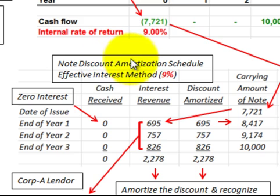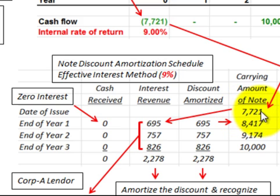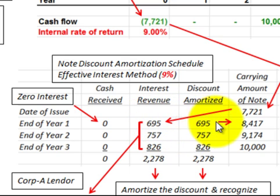Since the note was sold below its face value, we set up a discount amortization schedule using the effective interest method at the 9% implicit rate. Because it's a zero interest-bearing note, cash payments are zero for each year. To determine interest revenue for year one, take the carrying value of $7,721 times 9%, which gives us $695. Since there are no cash interest payments, the amortization equals the interest revenue. Adding $695 to $7,721 gives a new carrying value of $8,417.